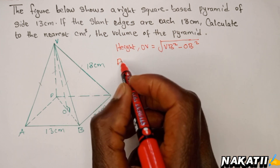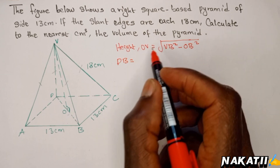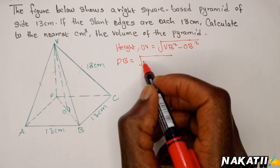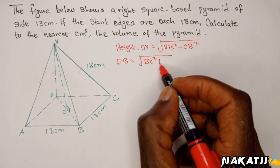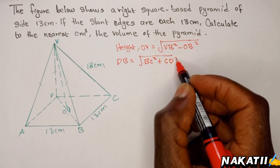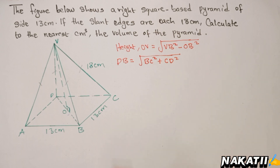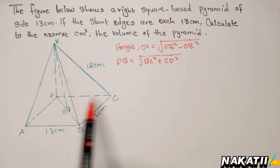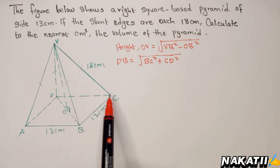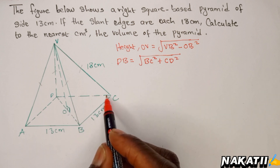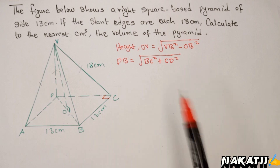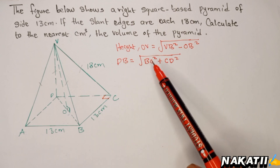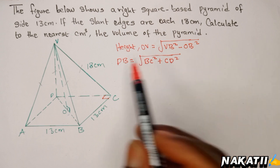Therefore, first we need to find what DB is. DB is simply the square root of BC squared plus CD squared, again using Pythagoras' theorem. This is a right-angle triangle, and BC is 13 and CD is 13, with a 90-degree angle. Therefore, using Pythagoras' theorem, DB equals the square root of BC squared plus CD squared.